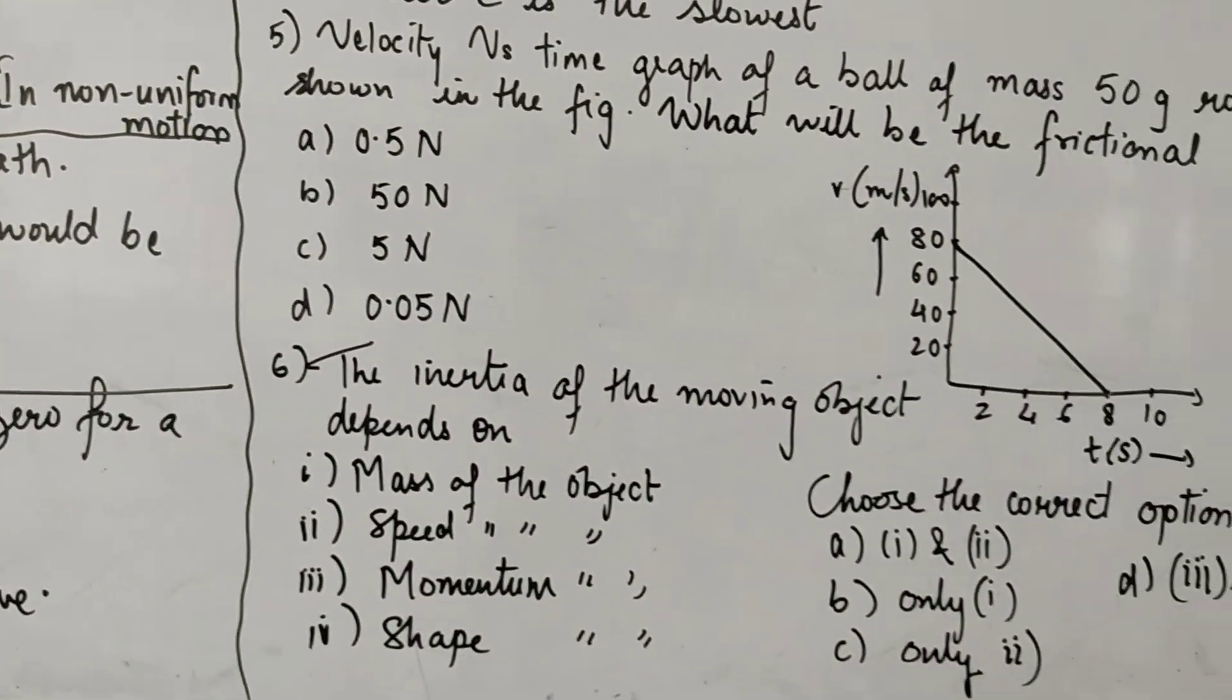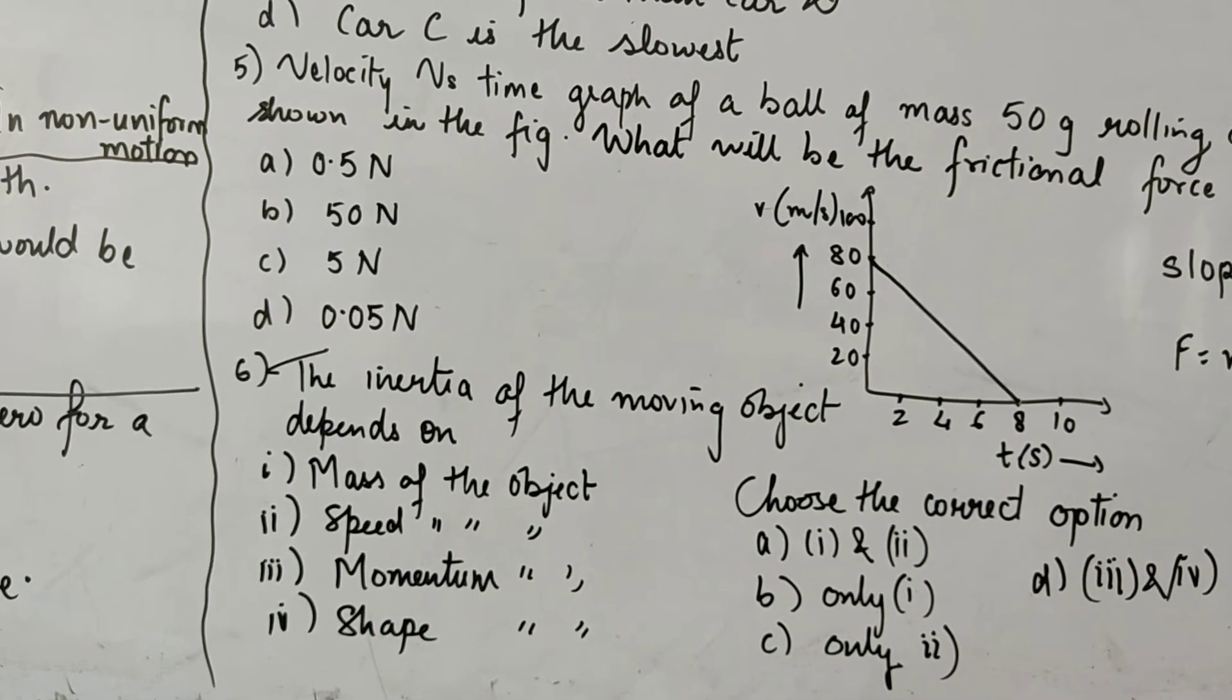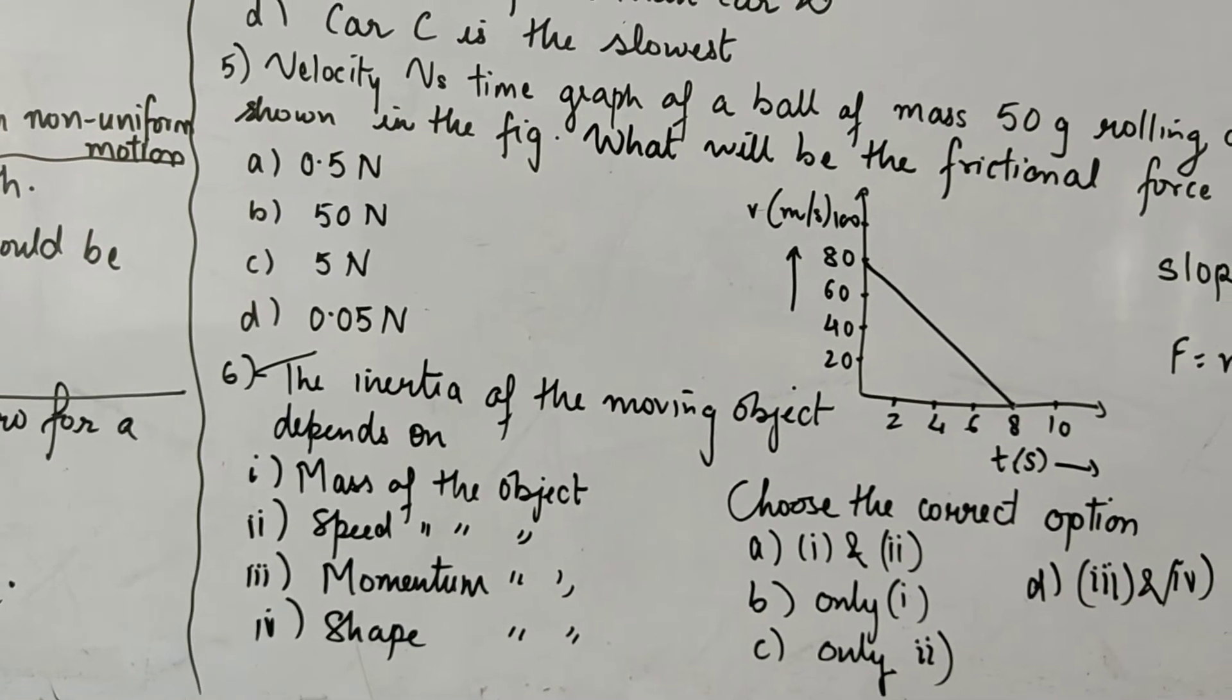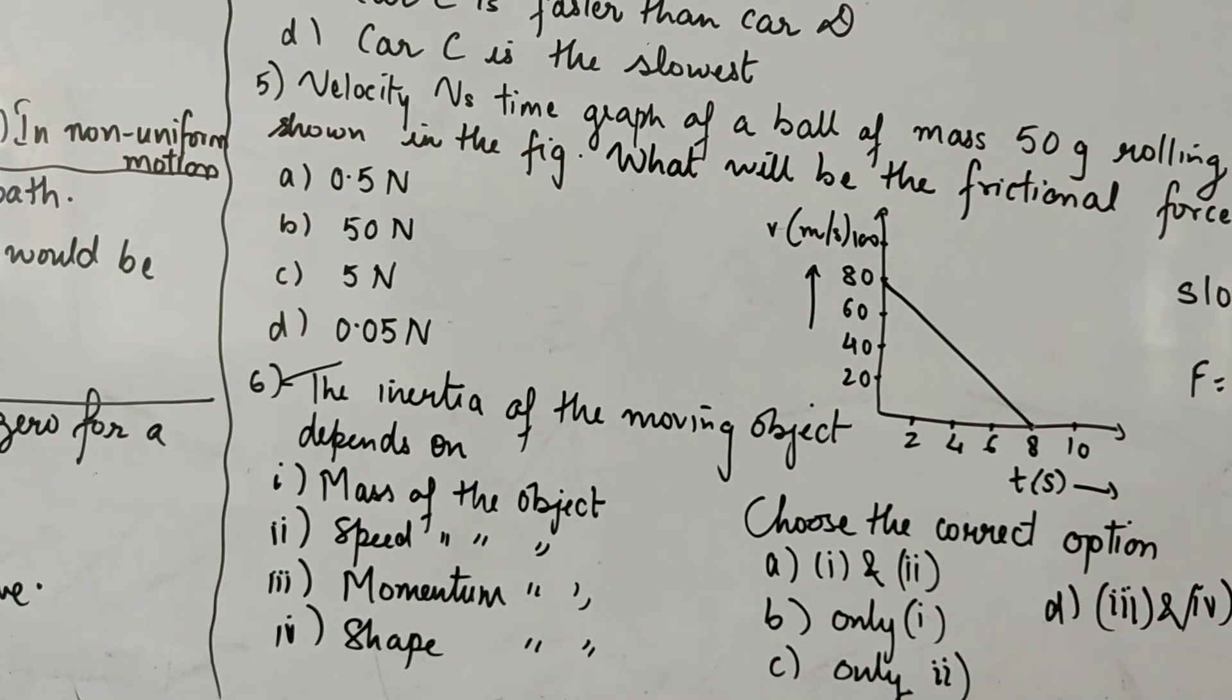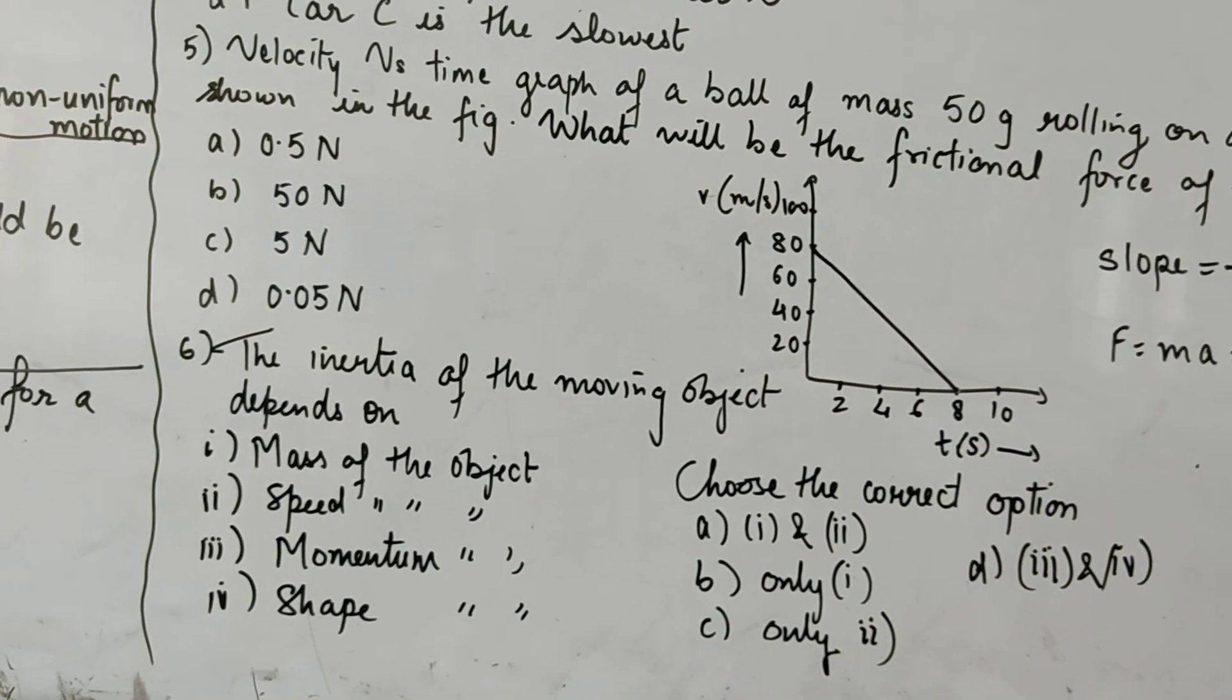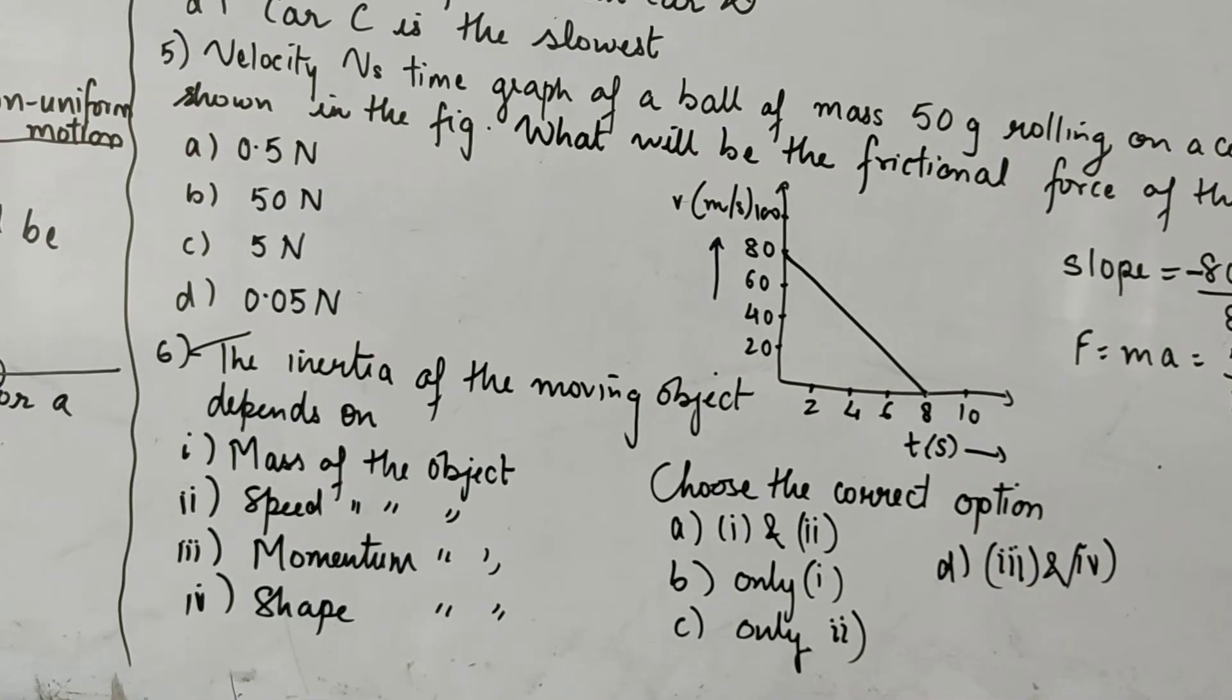Now next MCQ, the inertia of a moving body depends, moving object depends on - there are four options, four things given here: mass of the object, speed of the object, momentum of the object and shape of the object. Now you have to choose the correct option from A, B, C and D. You have to choose a correct option. What is A? 1 and 2. It means the inertia of a moving object depends upon mass as well as speed. We know it is wrong.